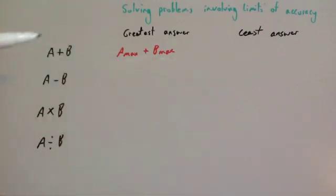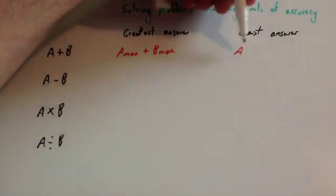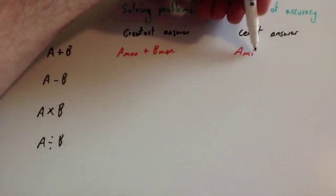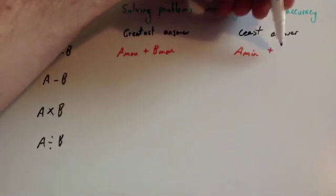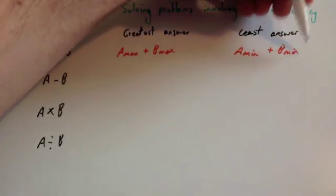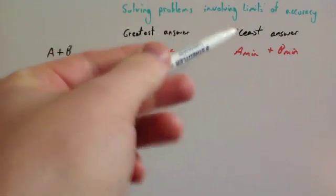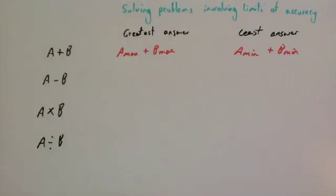The lowest possible answer — obviously you'd want to add the two lower bounds. So you'd do a min plus b min. If you add the two lower bounds, that gives you the lowest answer.